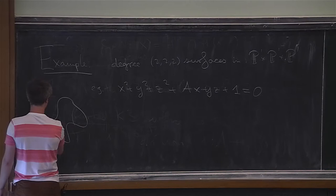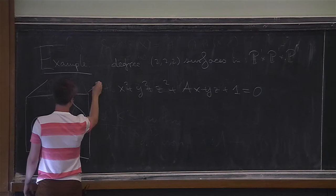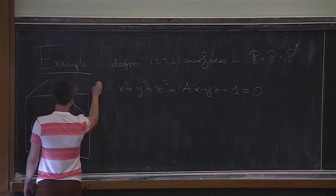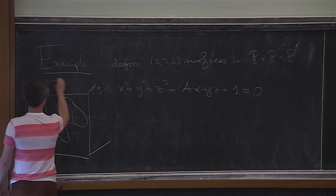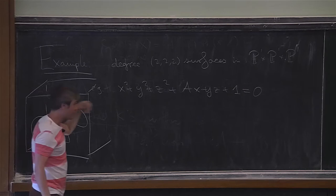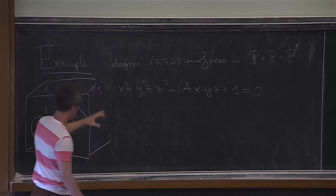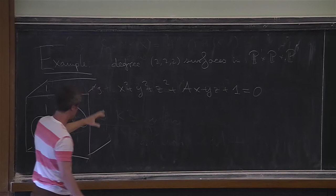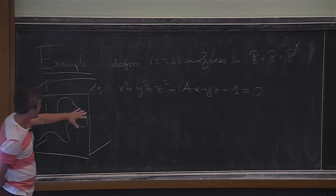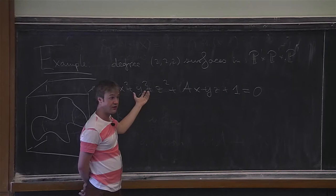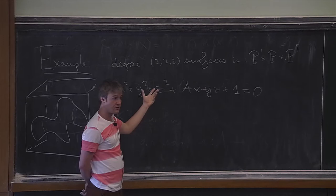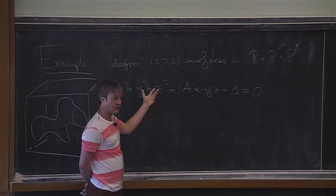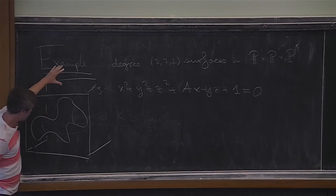The surface lives in 3-space, and you can think of the product of P^1s as holding it in a box. You can check that this is a K3 surface using the residue construction, writing an explicit volume form on the manifold. If you freeze two of the variables, say treating y and z as constants, you get a quadratic equation in x, which has two solutions, and you can exchange those two solutions.